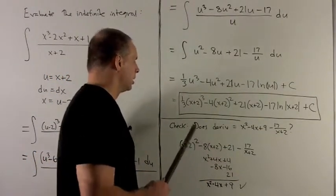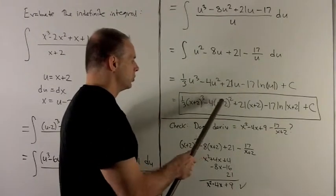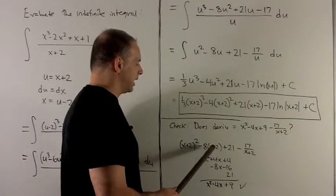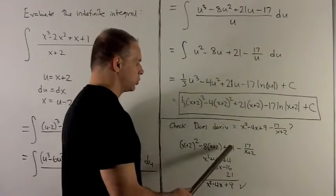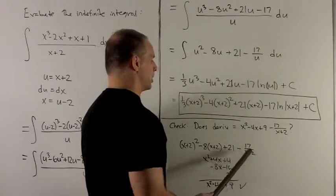Let's take a look. Take my 3 down, that gives me x plus 2 squared. 2 comes down, giving me minus 8x plus 2. Derivative of this gives me 21. Derivative of this gives me 17 over x plus 2.